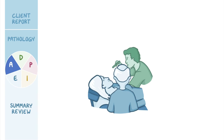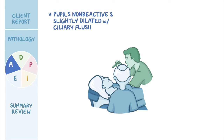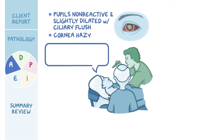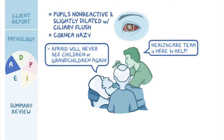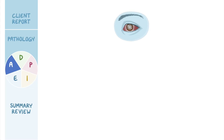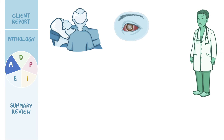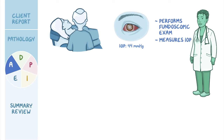You examine her eyes with your pen light and note that her pupils are non-reactive and slightly dilated with ciliary flush, and her cornea looks hazy. Mrs. Yao begins to cry, stating that she is afraid she will never see her children or grandchildren again. You reassure her that the healthcare team is here to help her. The ED physician enters the room, performs a fundoscopic exam, and measures her IOP, which is 44 millimeters of mercury.